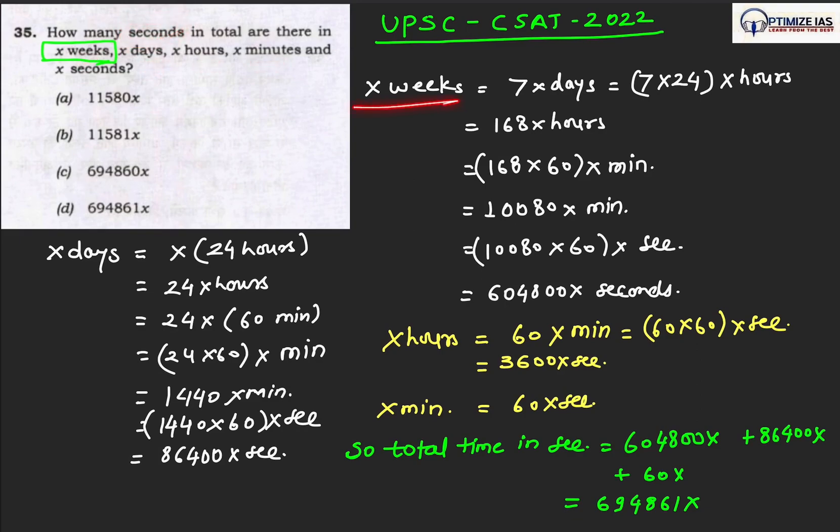We have calculated that x weeks means you have to convert these weeks into days. In one week there are 7 days, so 7x days. Then you have to convert days into hours - in one day there are 24 hours. Then this hour should be converted into minutes, multiplied by 60. And then this minute was converted into seconds, multiplied by 60.